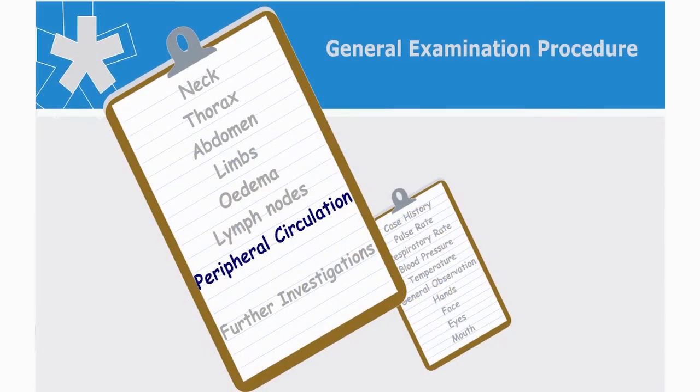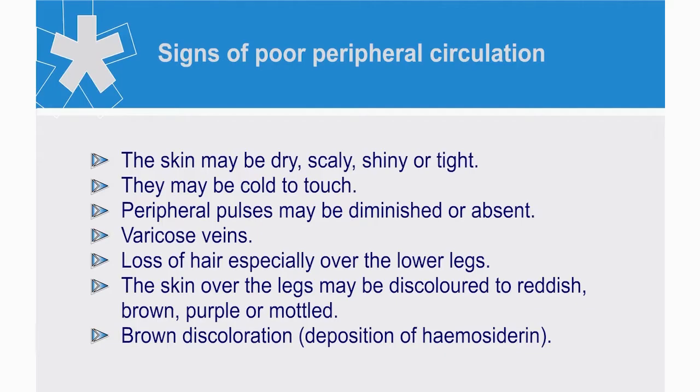Finally, we evaluate the vascular integrity and state of peripheral circulation. The state of the skin, nails, and hair provide useful indicators of health. In someone with established poor peripheral circulation, the skin may be dry, scaly, shiny, or tight. They may be cold to touch. The peripheral pulses may be diminished or absent. The presence of varicose veins and loss of hair, especially over the lower legs.